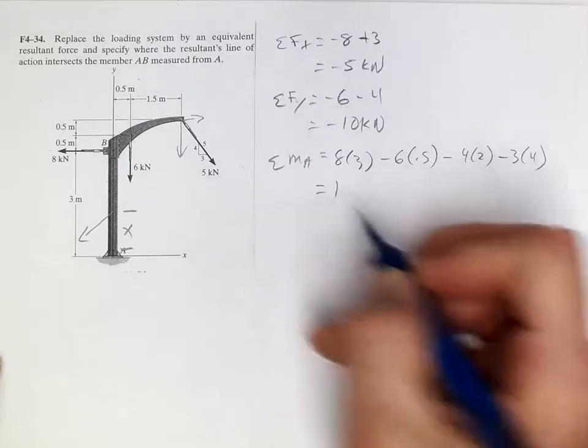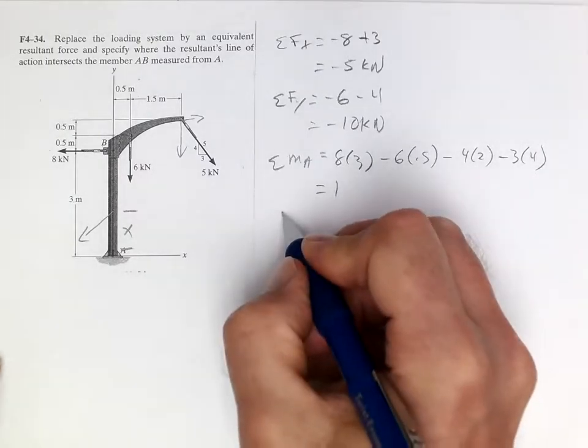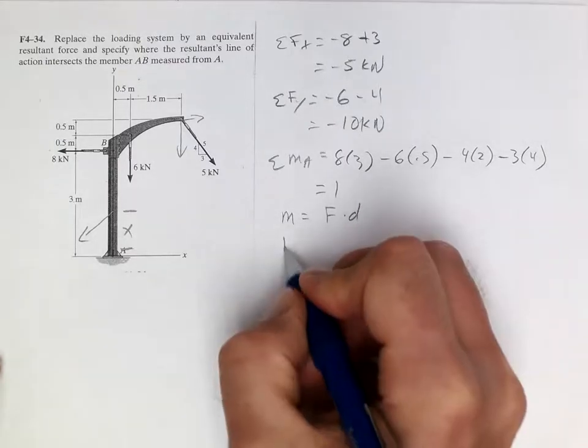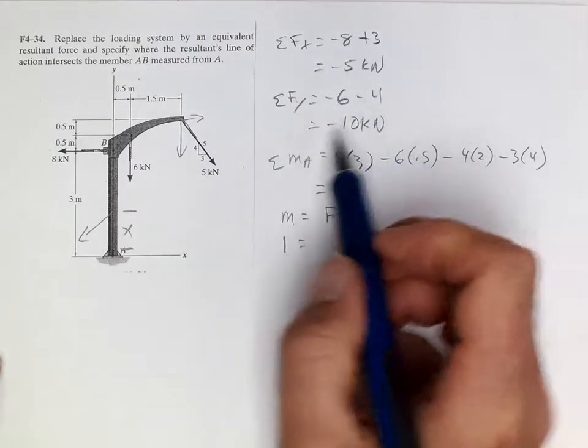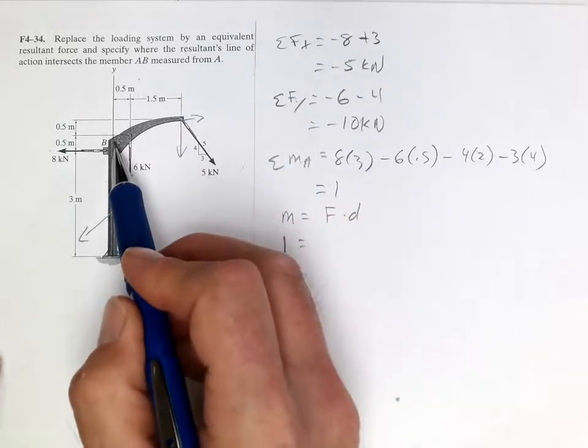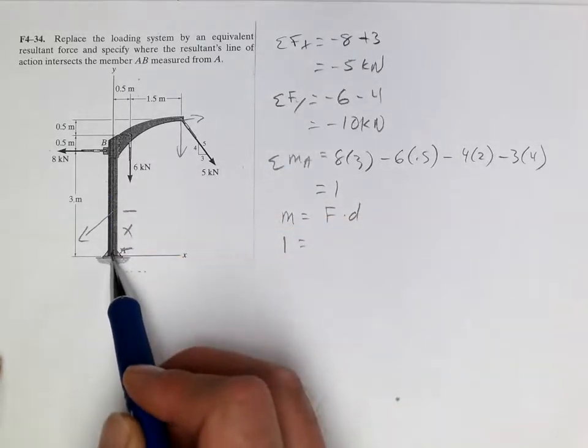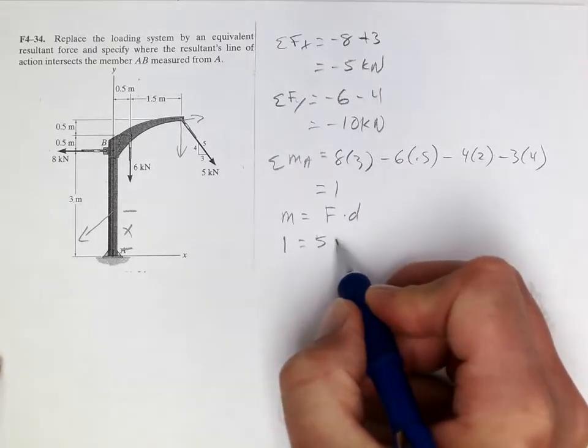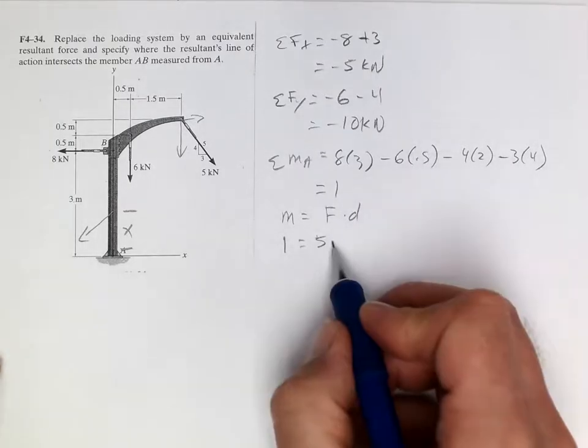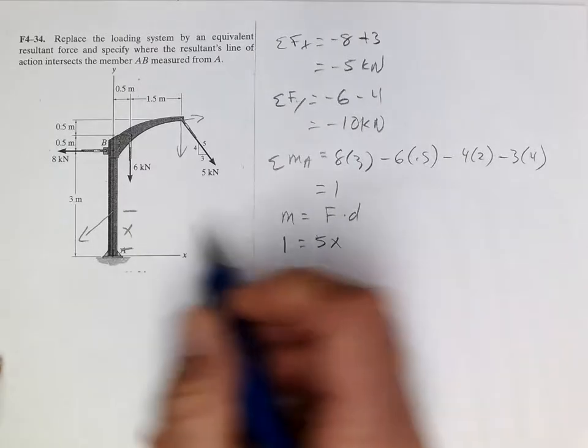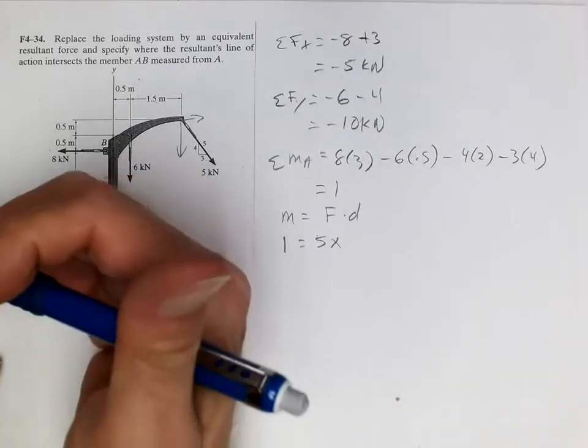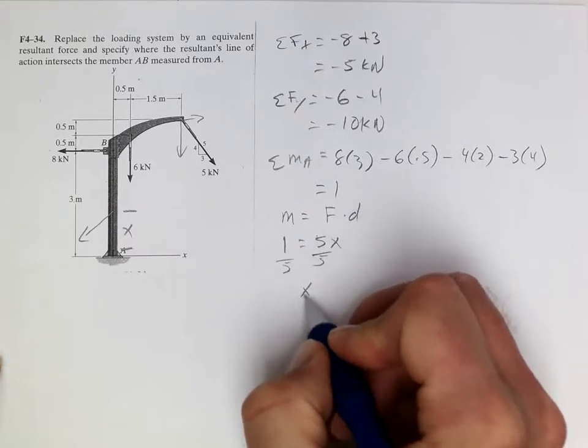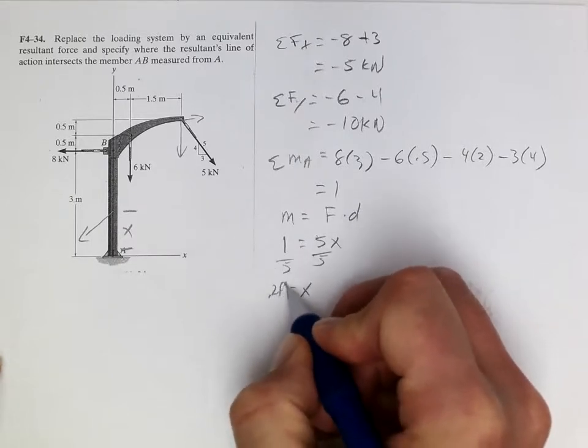So 3 times 4 and that results to 1. The moment equals the force times the distance. The moment is 1. The force, the y force goes straight through A, so it doesn't cause a moment. All we have is the 5 and the distance x, and it's going this way so it's causing a positive rotation. So if you divide by 5, x equals 0.2 feet.